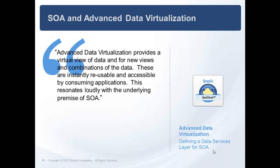You can use a cloud model or an on-premise model. Advanced data virtualization gives you a virtual view of data, so you can see the recombinant variances of the data without doing the federation, without moving it. This is in sharp contrast to the old EII technologies or to the basic data virtualization that's been out there for many years, which really doesn't give you the power of a virtual view without moving the data. This virtual view really empowers reusability and accessibility by consuming apps, and resonates so loudly with the underlying premise of SOA.